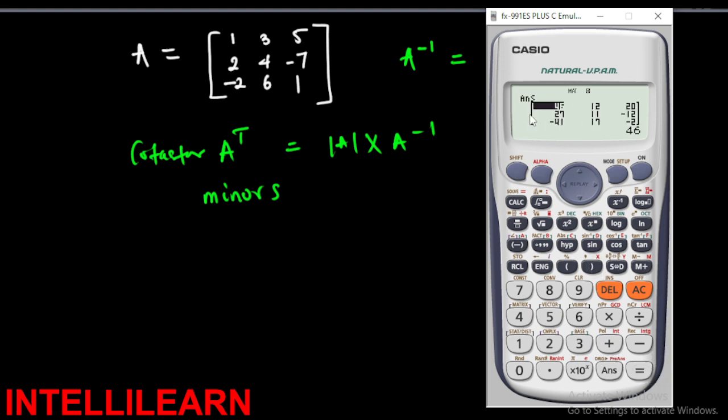So these are the minors of each of the elements. The minor of 1 is 46, -3 is 12, -5 is 20, of 2 is 27, of 4 is 11, and you can do it normally and see it is actually correct.